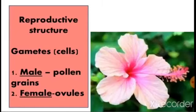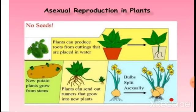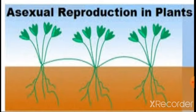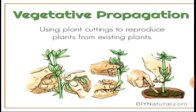Next, what is meant by asexual reproduction? It is just the opposite of the sexual process. Asexual reproduction is a mode of reproduction which does not involve the fusion of male and female gametes. We can say asexual reproduction is an artificial mode. Plants reproduce asexually through vegetative propagation.